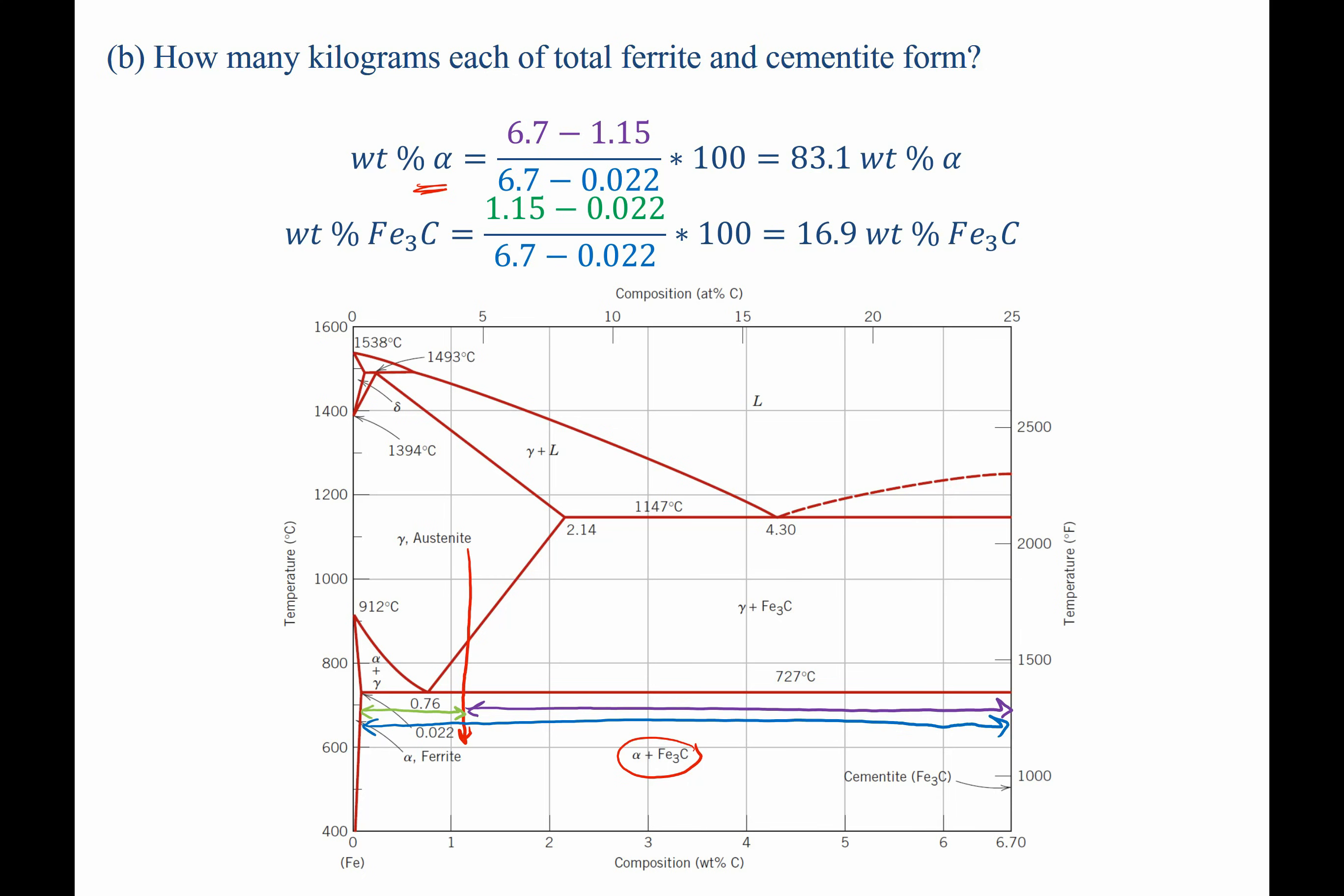Punching values in for these, we find that it's 83.1 weight percent of the alpha phase. And since we started out with 1 kilogram, that means that we have 0.831 kilograms of the alpha phase. And we have 16.9 weight percent of cementite, or in other words, we have 0.169 kilograms of Fe3C.